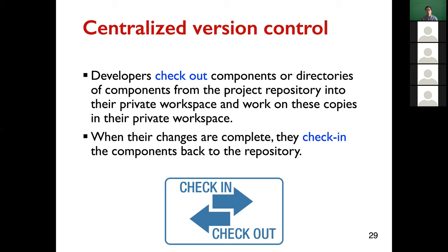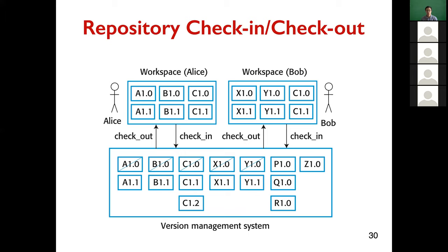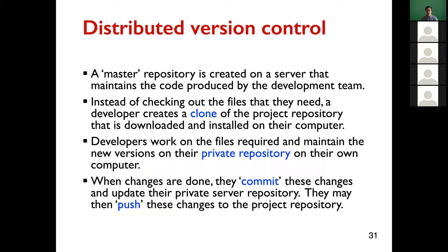In centralized version control, we cannot commit to a local repository — there is only one version control repository. This is how it works: we have a version management system with different components and versions. Two developers, Alice and Bob, check out subsets of components, make their individual changes, and then check in or return the changes back to the central repository. That is the check-in/check-out mechanism of centralized version control.